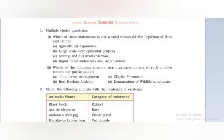Which of these statements is not a valid reason for the depletion of flora and fauna? The answer is C: grazing and fuel wood collection. The second question: which of the following conservation strategies do not directly involve community participation? Option D is the correct answer.